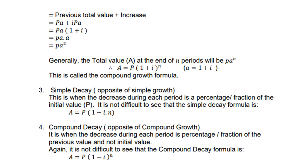Simple decay is the opposite of simple growth: the decrease during each period is a percentage or fraction of the initial value P. The simple decay formula is A = P(1 − in). Compound decay is the opposite of compound growth: the decrease during each period is a fraction of the previous value, not the initial value. The compound decay formula is A = P(1 − i)^n.